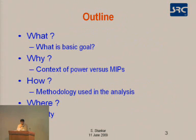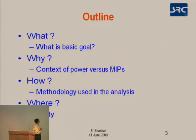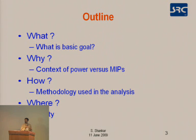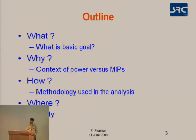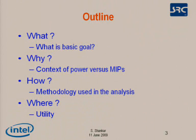The outline of the talk is as follows. The first part addresses the basic goal we are trying to achieve. The second part covers the context of power versus MIPS — the rationale for why this needs to be done. The third part, which is a new part of the methodology we are presenting for one of the first times, covers the methodology used in the analysis. The last part addresses where we are going with it.